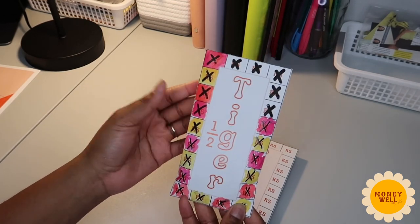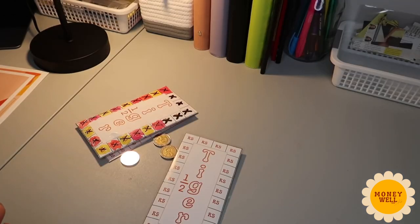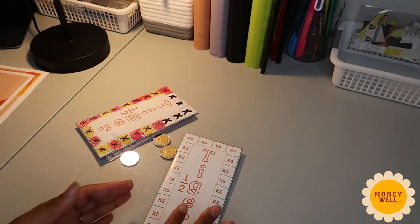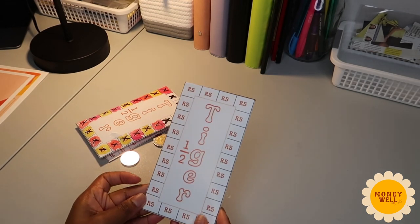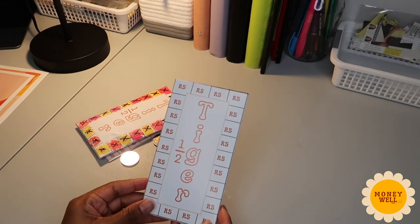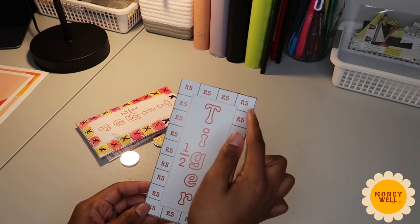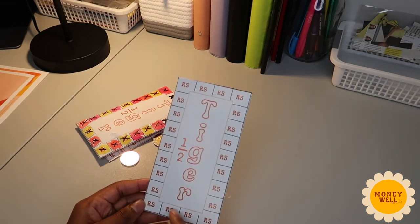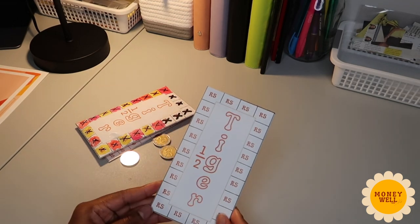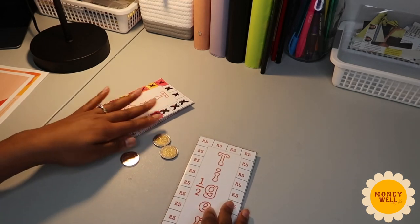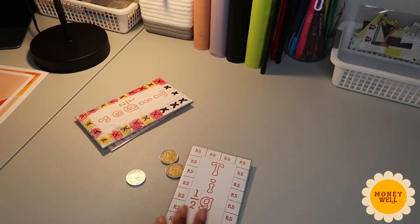Alright, so how the Money Well challenge works. So you start off with the half tiger envelope, you are basically saving five rand coins, right? So you color in or cross out each box every time you place money in.